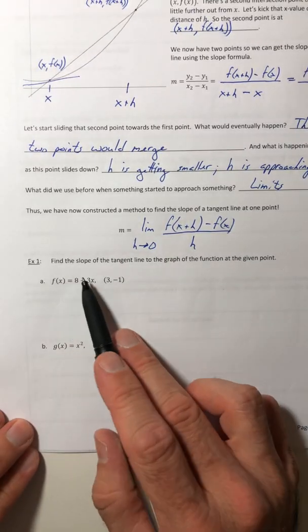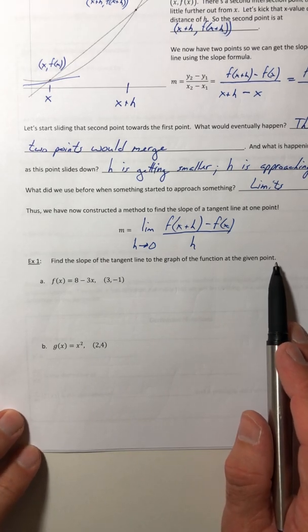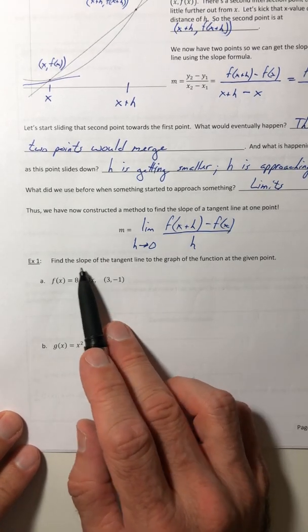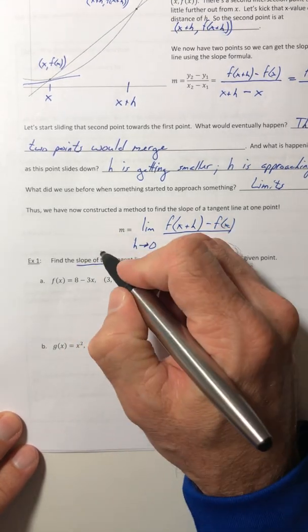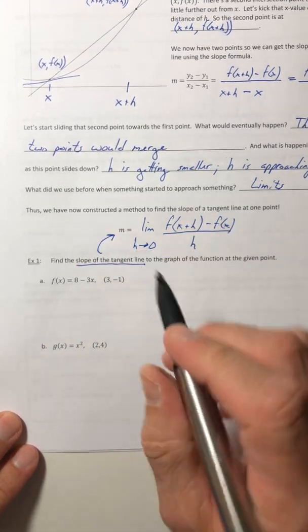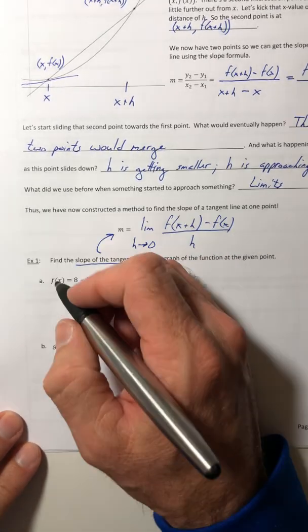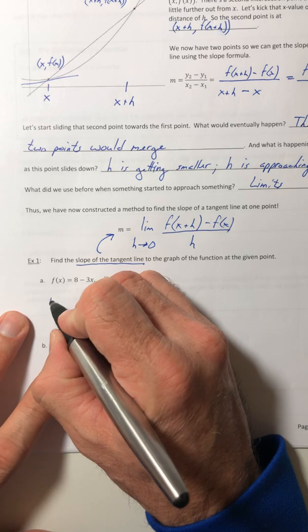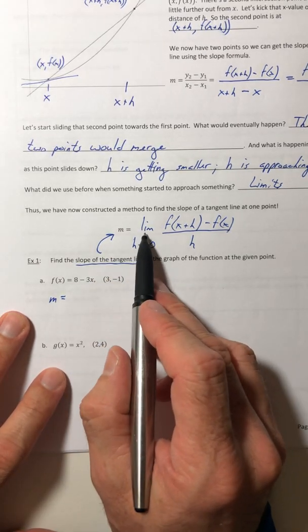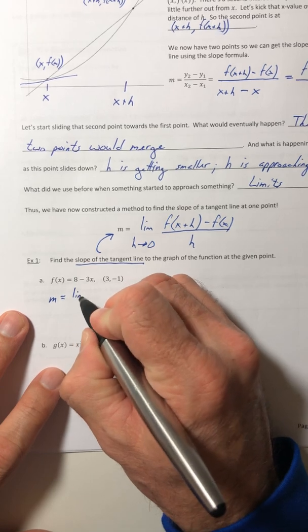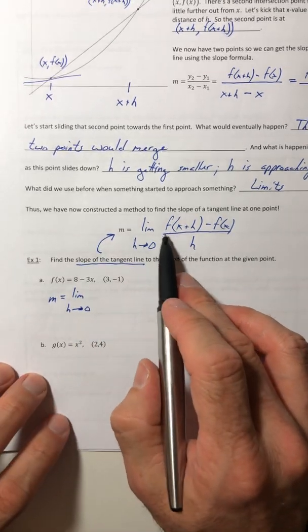Alright, Example 1: Find the slope of the tangent line to the graph of the function at the given point. So slope of the tangent line - that's talking about this M equals the limit. So that's what we want to find. That slope is equal to the limit as h approaches 0, and then the first piece...